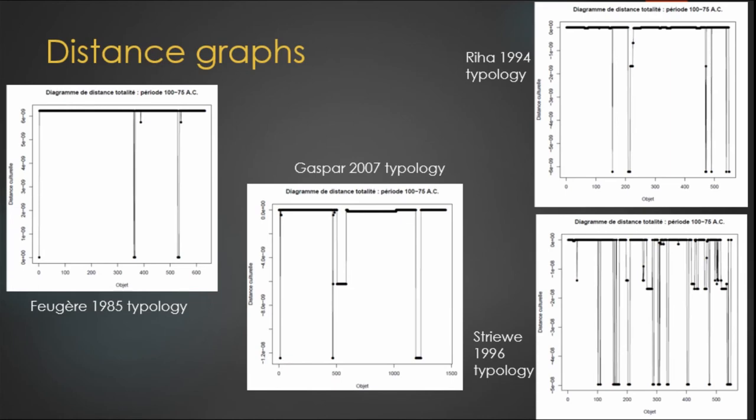So, the distance graphs obtained. You can see here the distance graph for every cell of the map of the four typologies considered in the same period, which is 100 to 75 BC. We see immediately that the results are different.